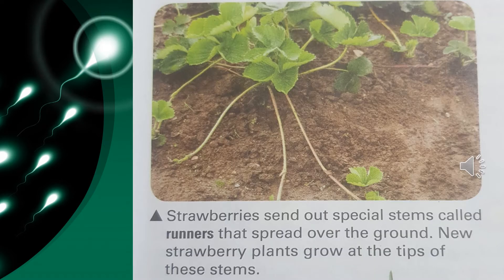In this slide you are viewing a diagram of a strawberry plant. You can see the stems of the plants spread over the ground. Strawberries send out special stems called runners that spread over the ground, and new strawberry plants grow at the tips of these stems.